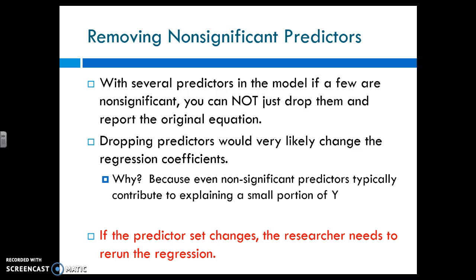When you have a predictor that is not significant, you want to delete it. But you cannot just drop it from, you can't just delete that line in the table and report the original equation. Everything changes when you drop one part of your model. Because all of the predictors are interacting with each other, then you have to rerun it because you're going to get different information every single time.